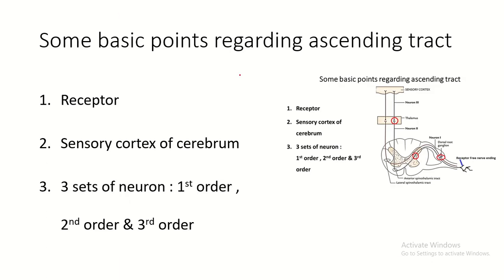Some basic points regarding the ascending tract: the receptor, the sensory cortex of the cerebrum, and three sets of neurons. The receptor receives the sensory information, and via the first-order, second-order, and third-order neurons, this sensory information reaches the sensory cortex.